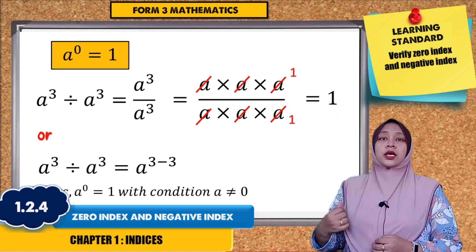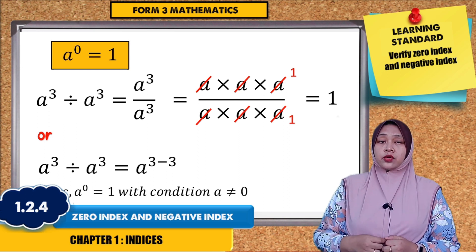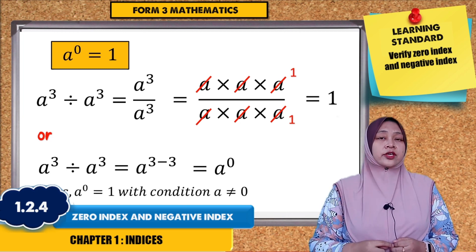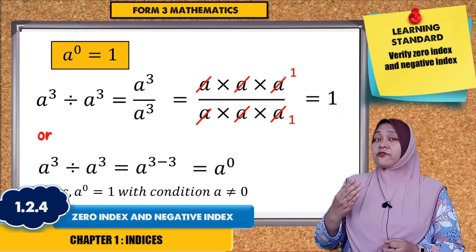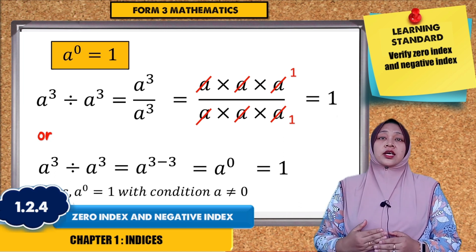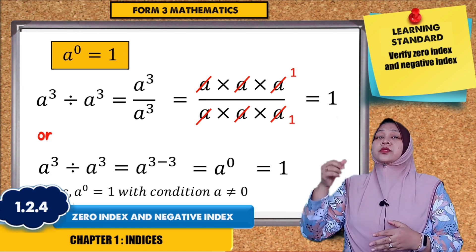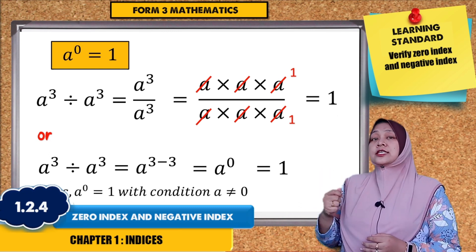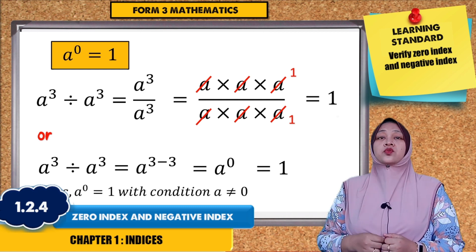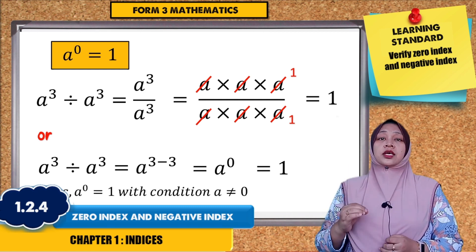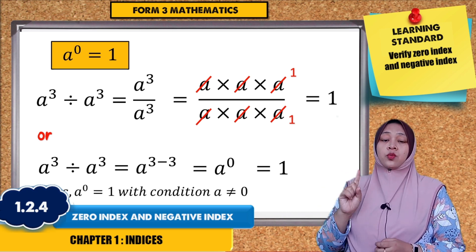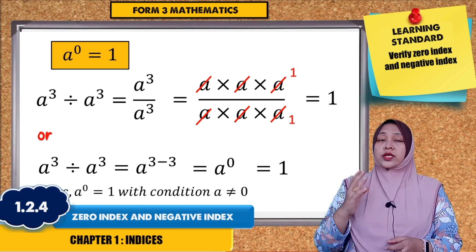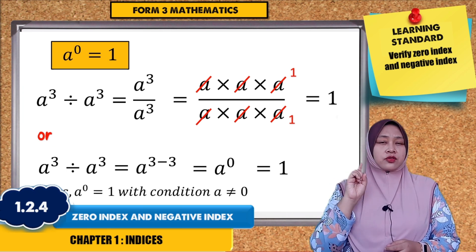Or, we can do it like this. A cubed divided by A cubed equals A to the power of 3 minus 3. Remember that we have learned about division of indices — if we divide the same base, the index should be subtracted. So A to the power of 3 minus 3 equals A to the power of 0, which equals 1.